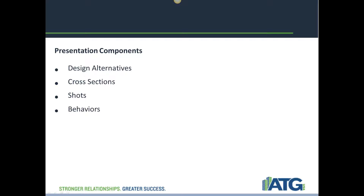Behaviors are functions that are applied to an object and control movement and add animation — for example, opening doors or having some kind of animated function to your model. Storyboard is used to graphically represent a sequence of steps being presented to the audience. It's a collaboration of all the other presentation components put together — manageable on a storyboard where you can view different design alternatives, sections, shots, videos, and behaviors collaboratively in a nice format, and adjust the speed of how that's being presented.